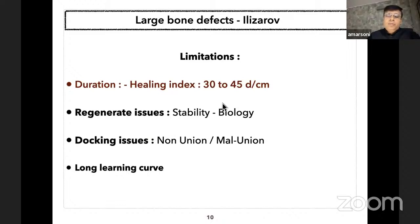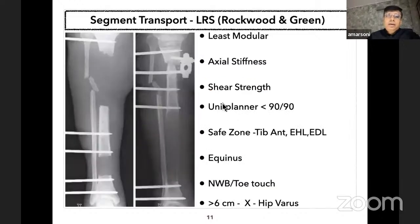Besides that, there are some regenerate issues which may be due to lack of stability or biological reasons, and docking site issues in the form of non-union and malunion. Ilizarov has a very long learning curve compared to internal fixation. Regarding segment transport with LRS, I am not against LRS, but it is the least modular implant—axial stiffness is very high, shear stiffness is very low, and uniplanar pin configuration has significantly less stability.